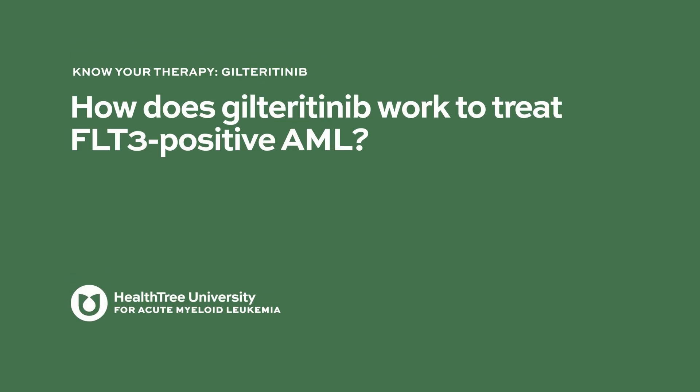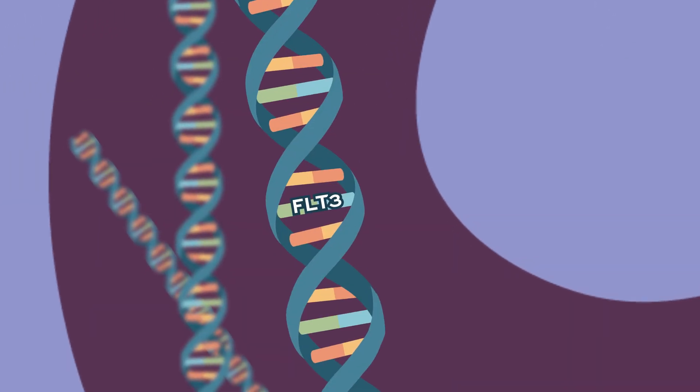In order to understand how gilteritinib works, you need to understand what happens when you just have the FLT3 mutation. When you have a FLT3 mutation in your AML cells, it essentially turns a switch on in those cells to tell them to constantly divide. It's kind of like a light switch that you just couldn't turn off — there was a short circuit and you couldn't get it to go off.